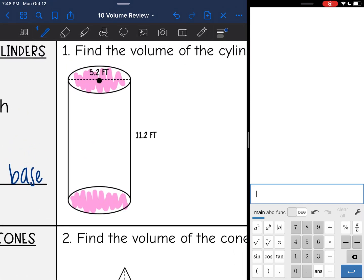So I shaded my bases, the height is 11.2. They gave me that the diameter is 5.2, but we just talked about how we're going to need pi r squared. So I'm going to divide 5.2 by 2 to find the radius. So 5.2 divided by 2 is 2.6.